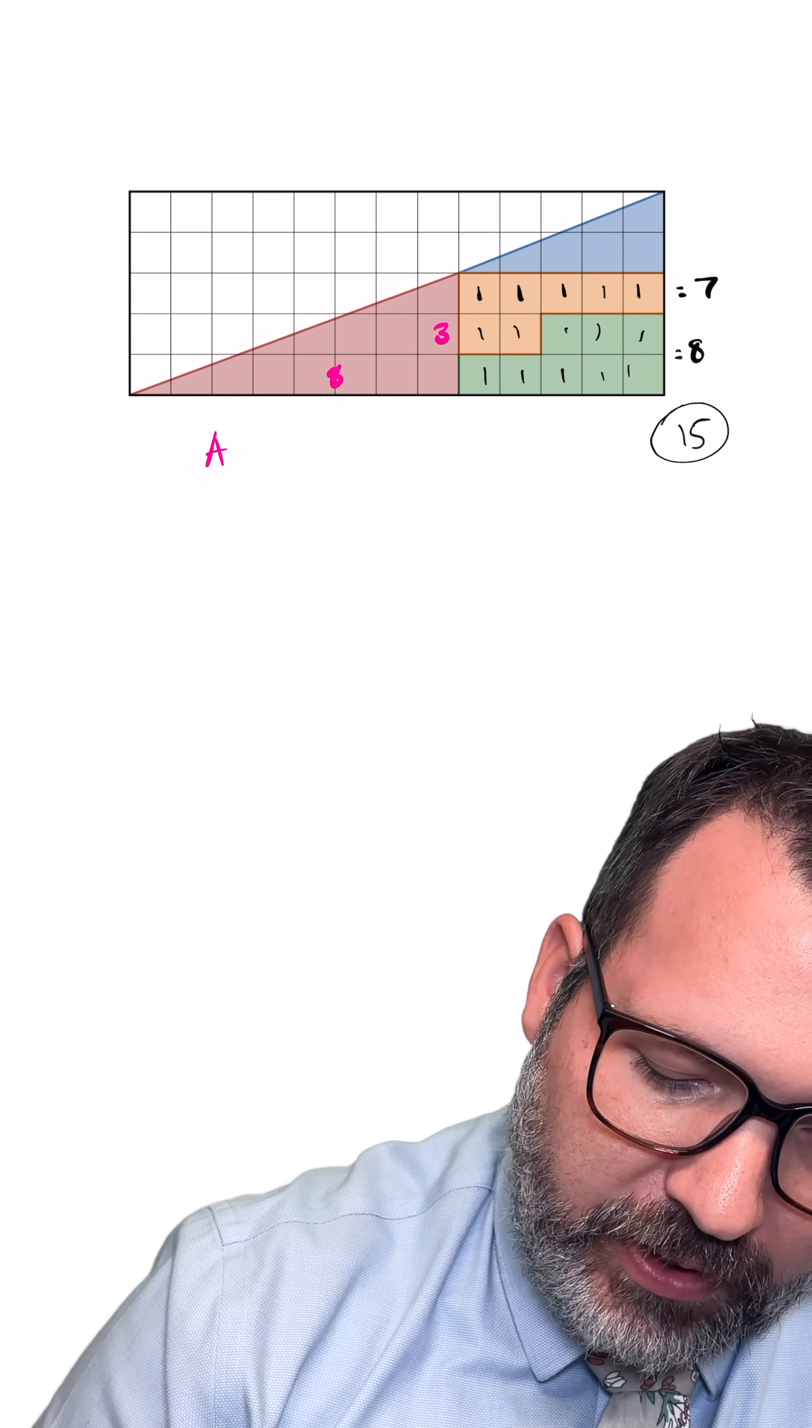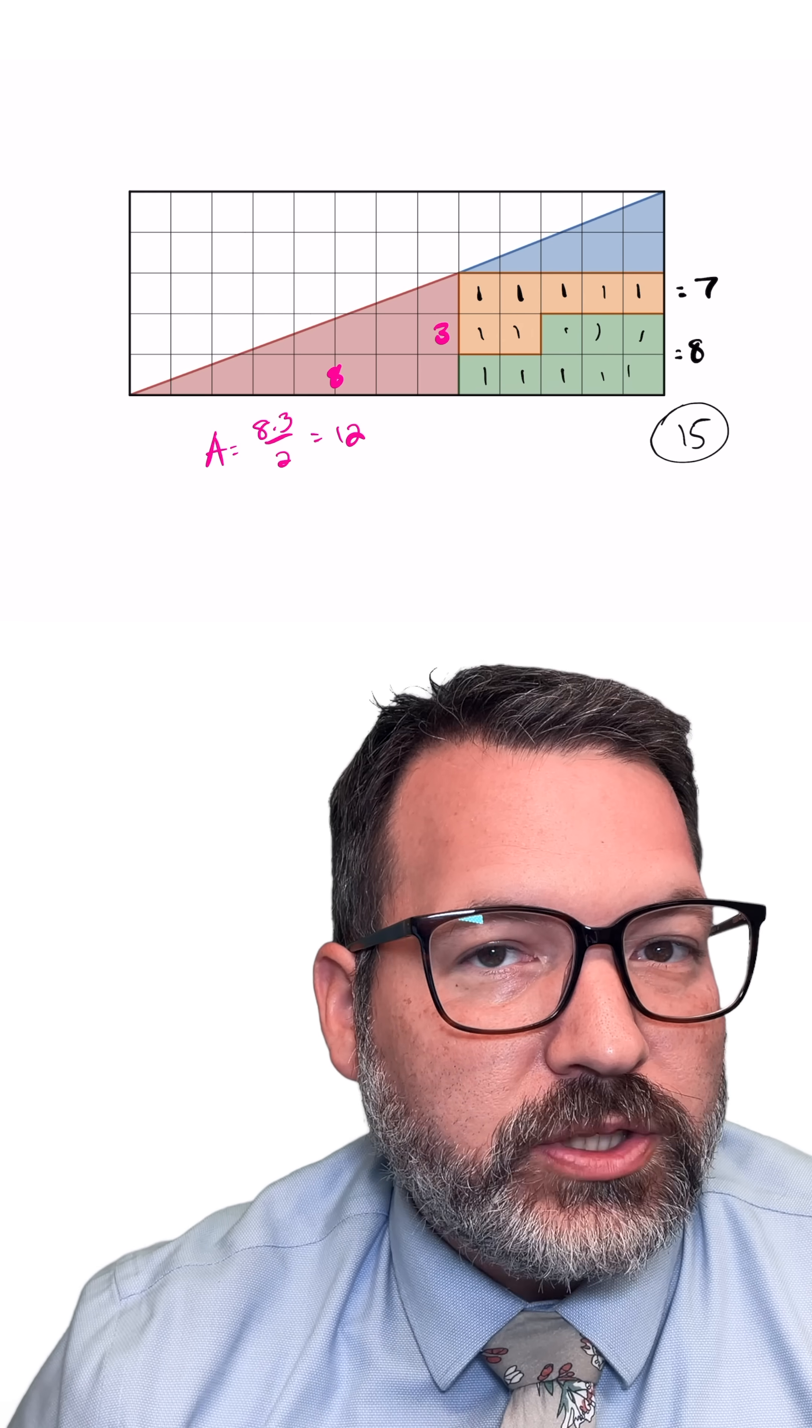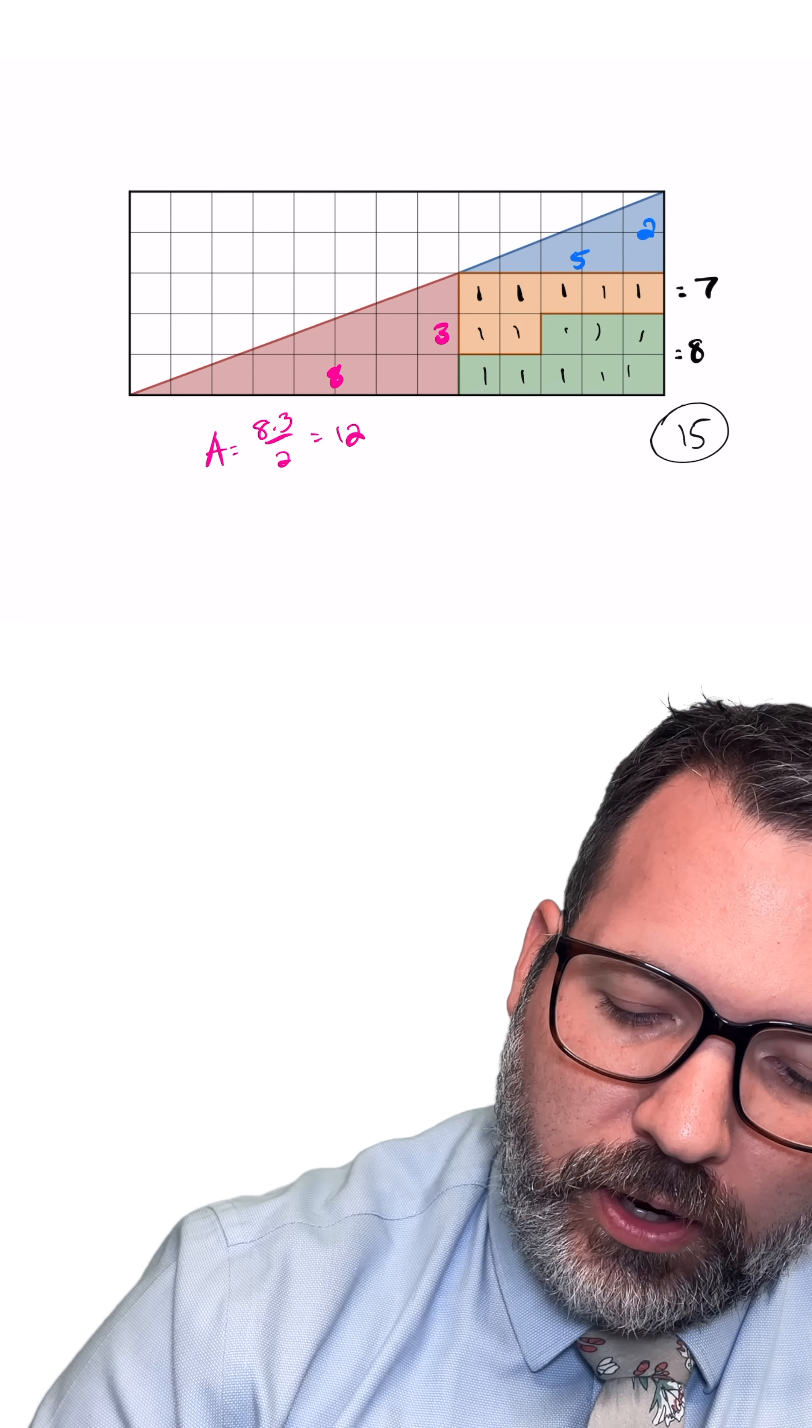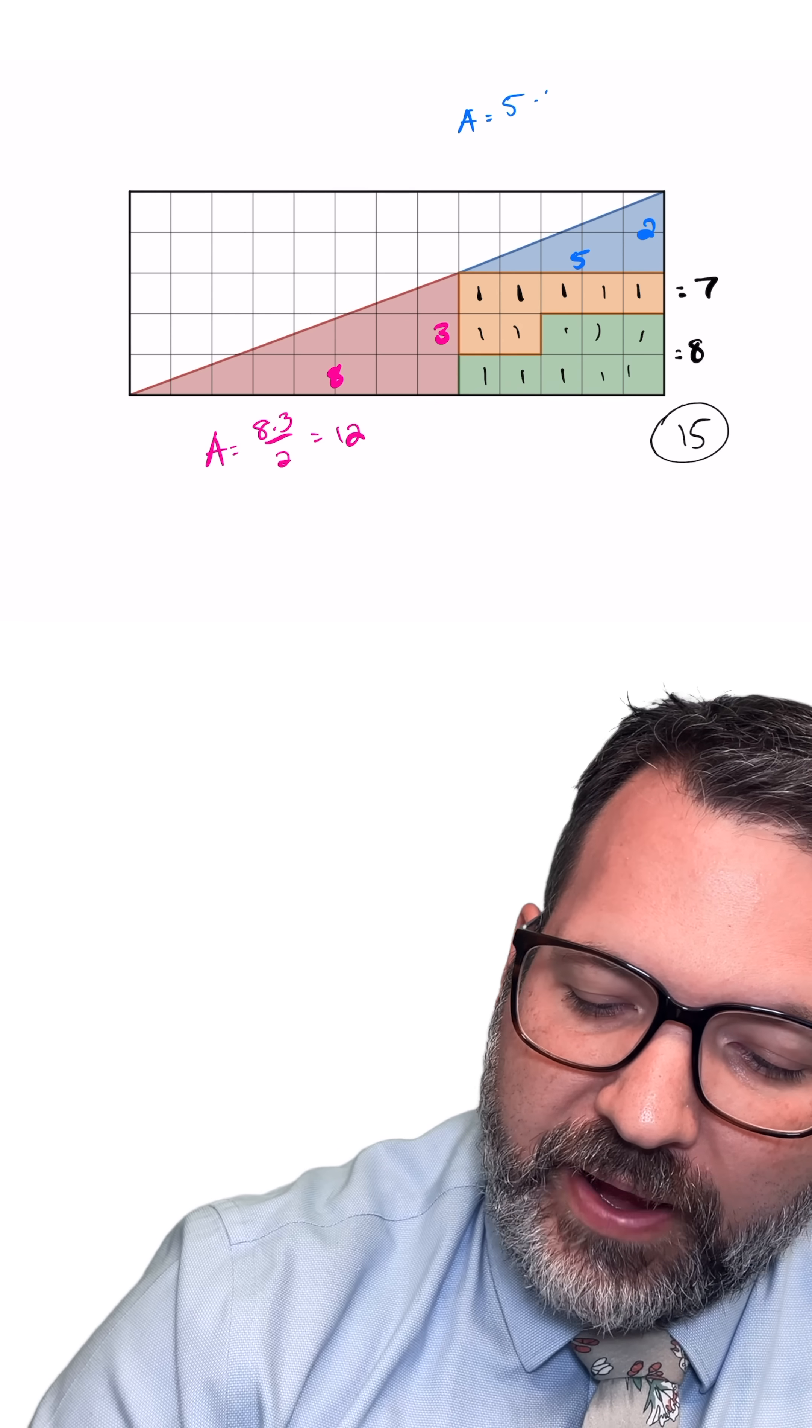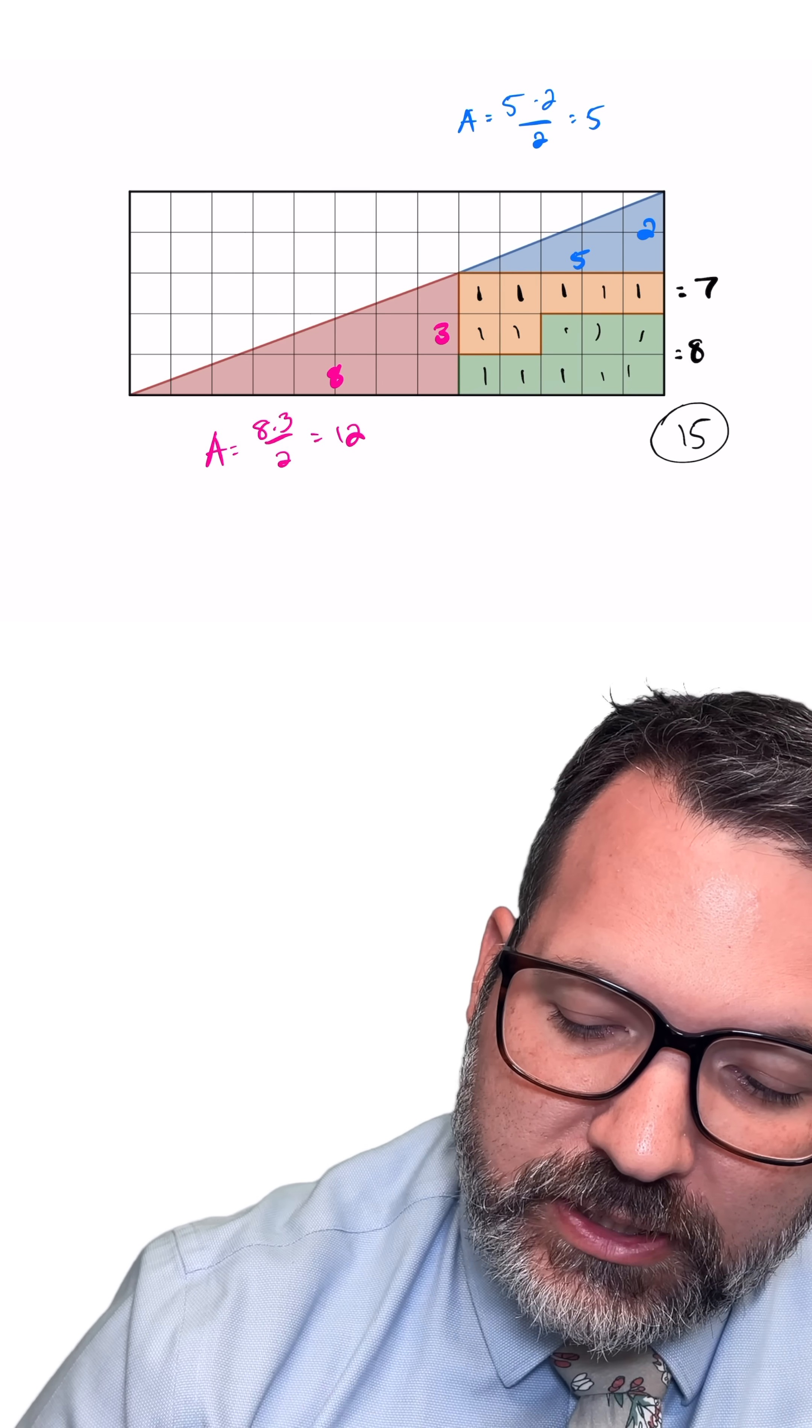This red triangle has a height of three and a base of eight, and so its area would be eight times three divided by two. That makes 12. And then the blue triangle, two units tall by five units long, that would be an area of five times two divided by two makes five.